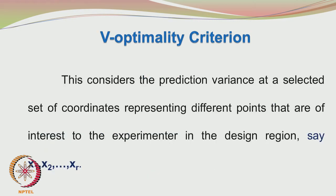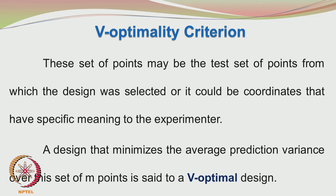Now let us look at another optimality criterion, called the V-optimality criterion. The basis for this is to consider the prediction variance at a selected set of coordinates representing different points of interest to the experimenter in the design region. We identify some coordinates in the design space: coordinate 1 X1, coordinate 2 X2, and so on. There is no hard and fast rule for choosing those points — they could be a set of test points from which the design was selected, or coordinates that have specific importance to the experimenter. Any design that minimizes the average prediction variance over this set of M points is said to be a V-optimal design.